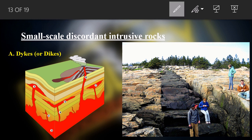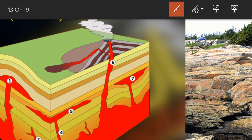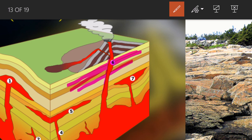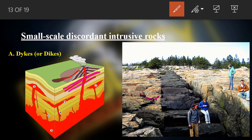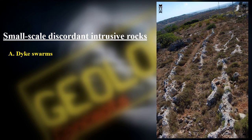Now we move to the discordant category, meaning the intrusion cuts across pre-existing structures. Dikes are sheet intrusions that cross-cut the stratification. In the figure, you can see the magma cutting vertically through horizontal country rocks. This sheet-like intrusion cutting through the stratified sequence is called a dike — it is discordant.